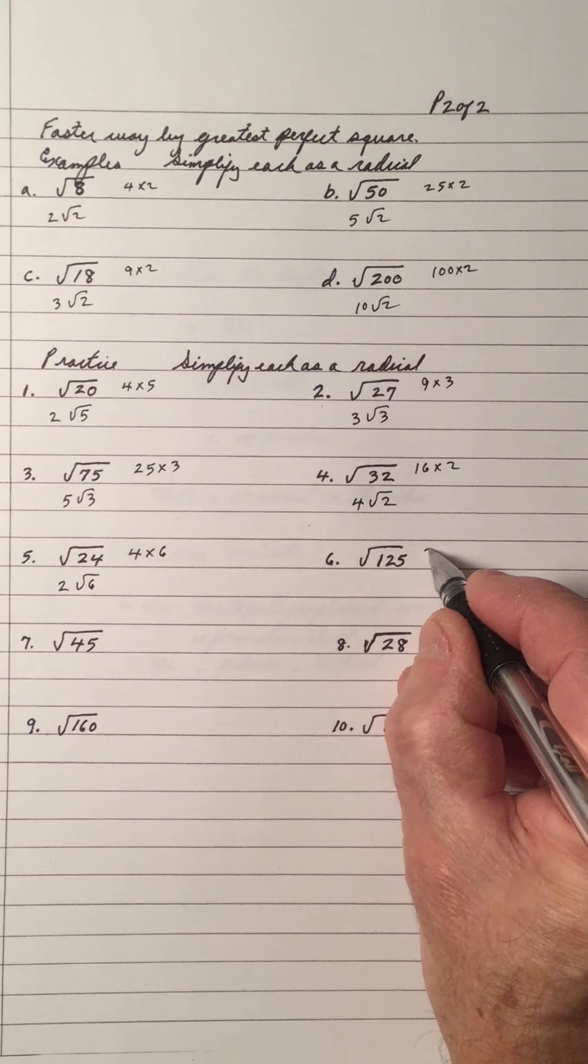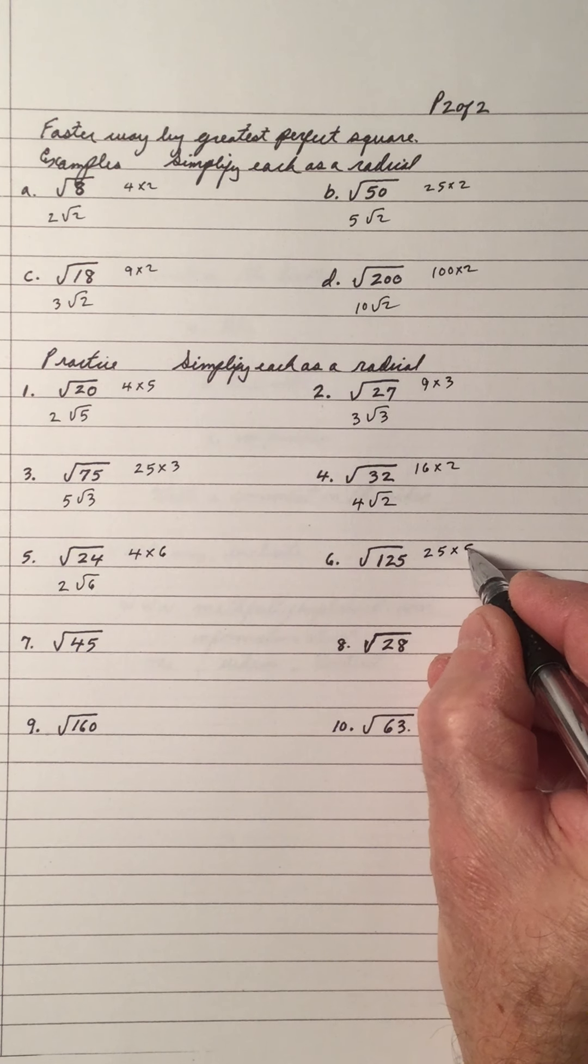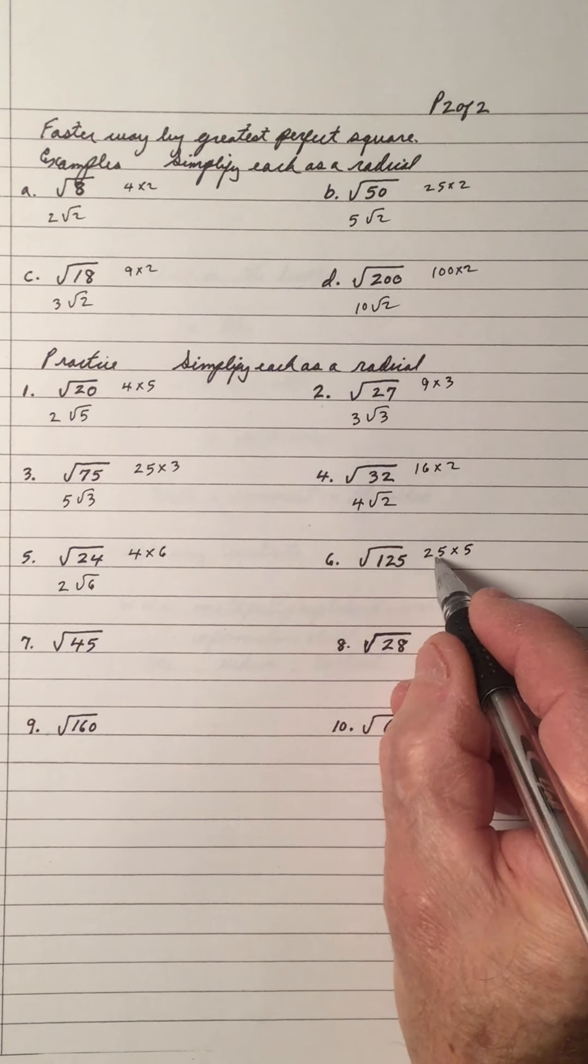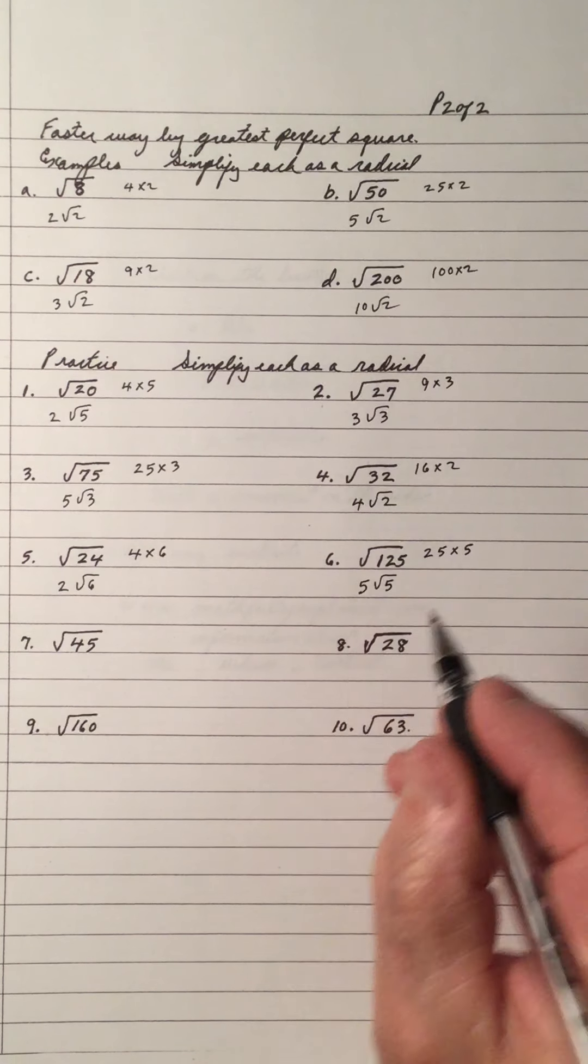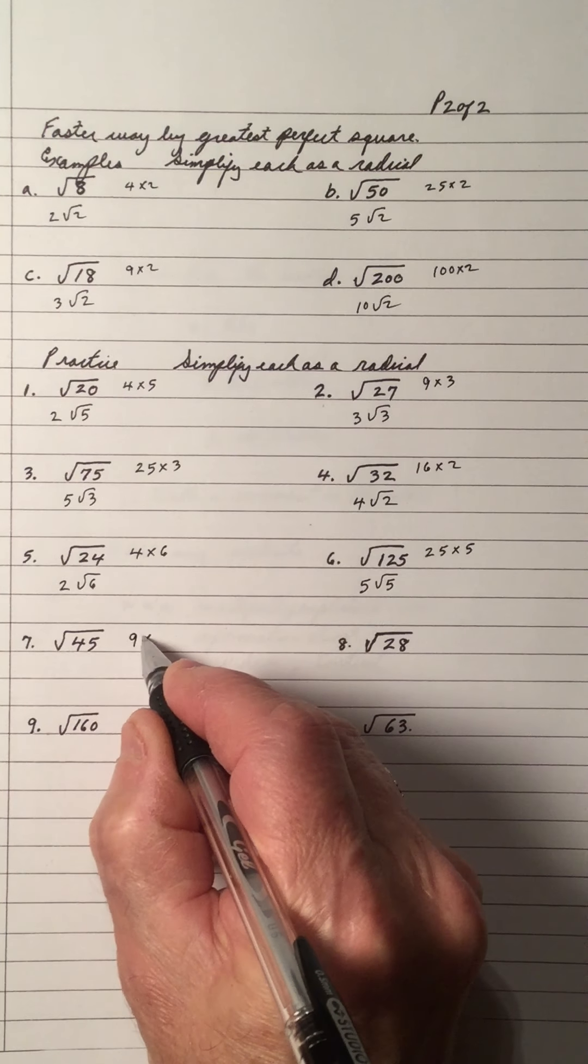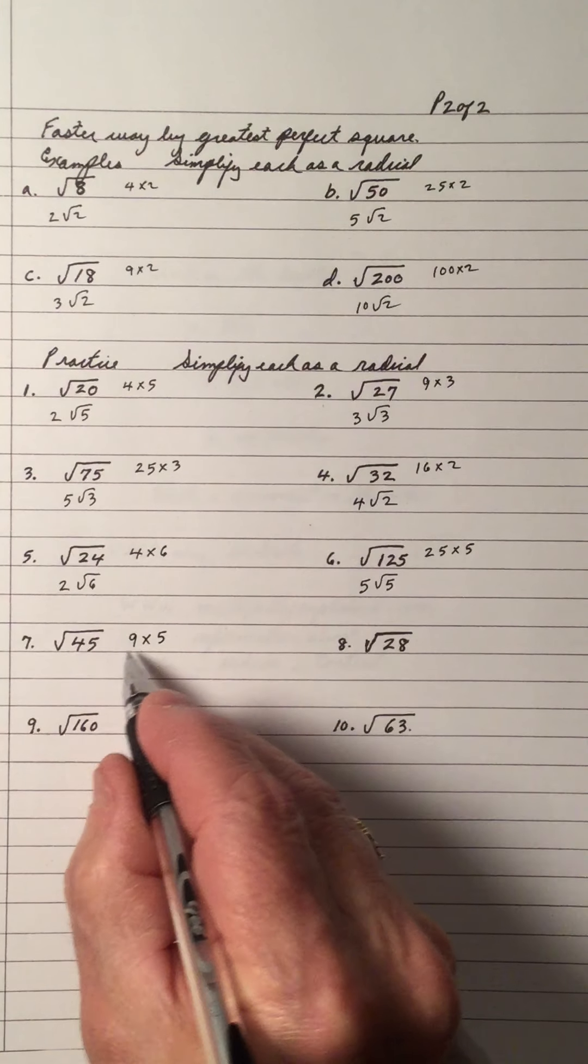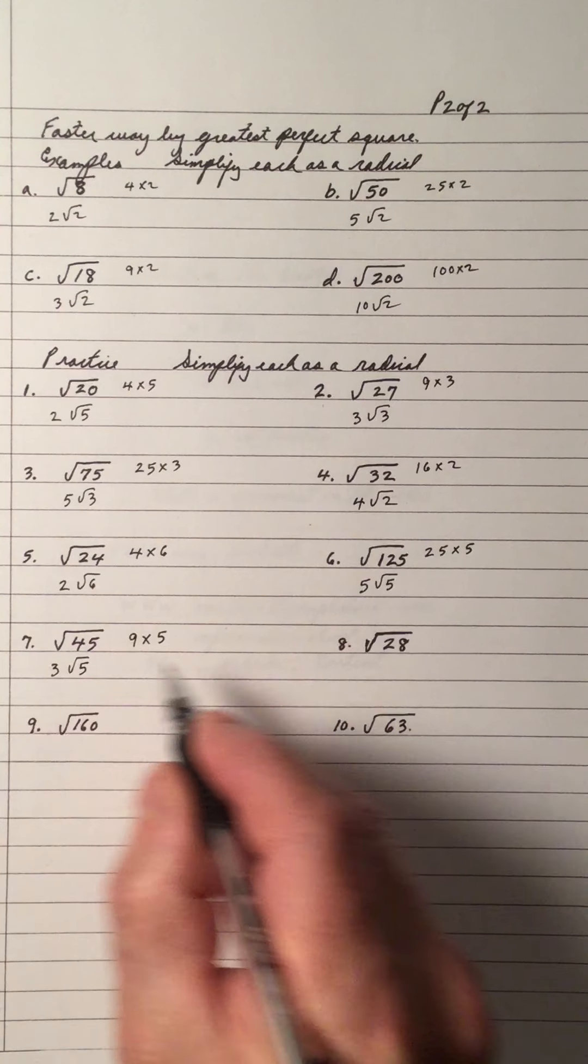125. The largest perfect square is 25. 25 into 125 is 5. And the square root of 25 is 5. And the 5 is inside. 45. The largest perfect square is 9. 9 times 5. The square root of 9 is 3 and root 5.